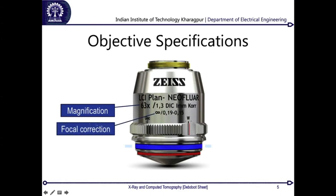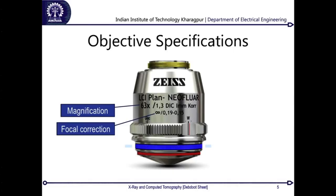The second specification on an objective is its focal correction. Infinity-corrected lenses produce a parallel beam, as if the object is placed at infinity. This is important because if the objective focused at a specific point, the tube lenses would also have to be repositioned every time the objective is moved up or down for focusing — a very complicated optical arrangement. That is why infinity correction is generally preferred, though some lenses do not offer it, which is explicitly stated on the lens.